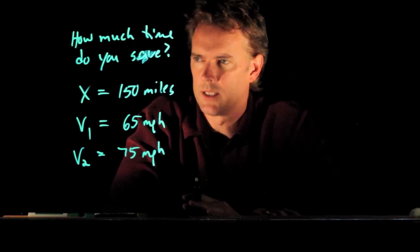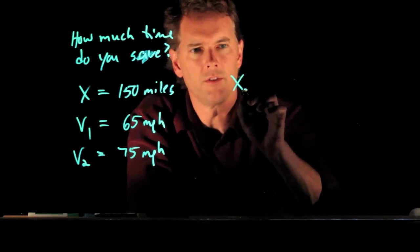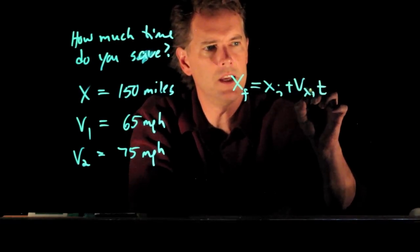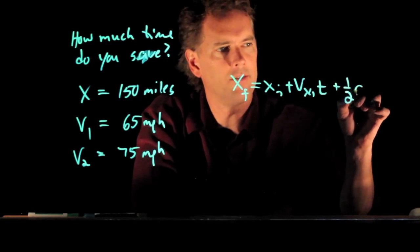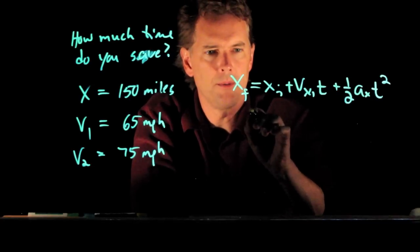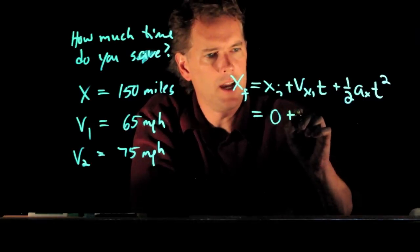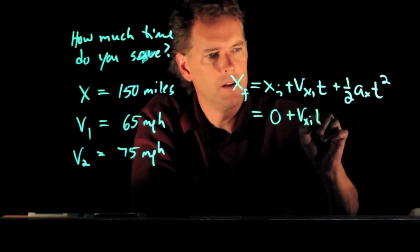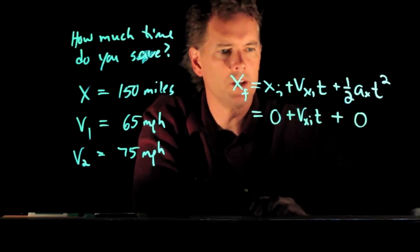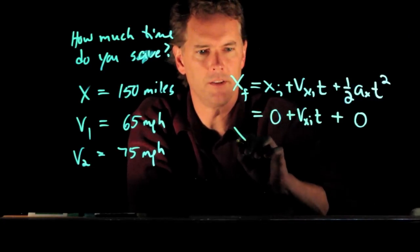So we need to know something about the kinematic equations for motion. One of the kinematic equations is this: Xf equals xi plus Vxi times t plus one-half a-sub-x t-squared. Now, in this problem, we're starting at x equals zero, so we can get rid of that. Vxi is your speed, which is a constant. And if it's a constant speed, then of course your acceleration is zero.